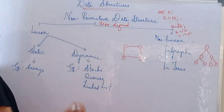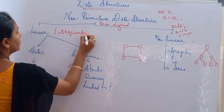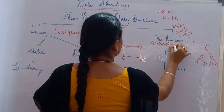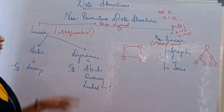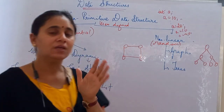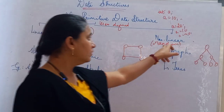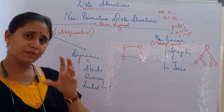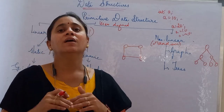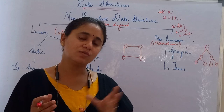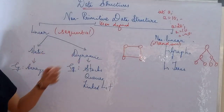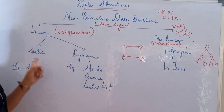Under non-primitive, you have two types: linear and non-linear. The meaning of linear is sequential. Non-linear means we may not be able to find out the exact order of that variable — that is called non-linear. Under linear, we have two types: static and dynamic.